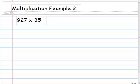Here's our second multiplication example. We're going to multiply 927 times 35. Again, what we'd like to do is to write this down vertically. 927 times 35.